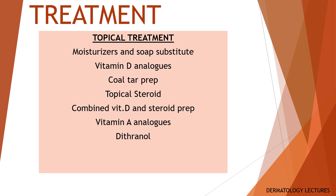Topical treatments include moisturizers and soap substitutes, which provide comfort, reduce scaling and improve barrier function. Vitamin D analogues, for example calcipotriol ointment, can be used for long-term management. Patients should expect a reduction in scaling after two weeks and a reduction in redness at four weeks. They are generally well tolerated, although greasiness and irritation can be an issue. Excessive quantities of vitamin D analogues can affect calcium metabolism; the maximum amount varies with different preparations. Their effects can be enhanced by occlusion, for example with cling film. Coal tar preparations can also be used for long-term management; they also take several weeks to work and their effects can be enhanced by occlusion. Depending on the concentration of coal tar, irritation can be an issue, as can the odor and staining associated with these preparations.